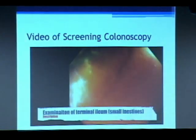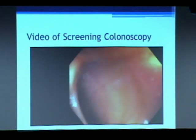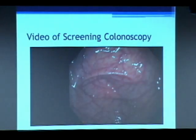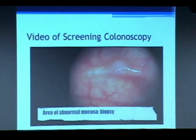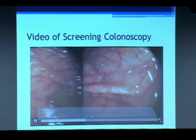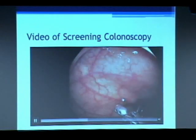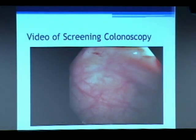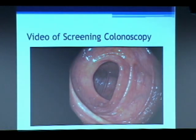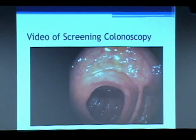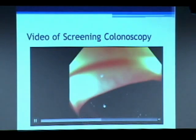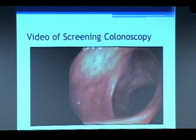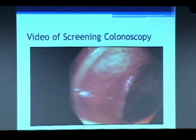We identify the opening for the appendix, which tells us we've made it all the way to where we need to go — we get to that point about 96% of the time. Here I get into the small intestines, called the terminal ileum, to verify we're in the right location. Then we start taking a look — cleaning, suctioning, looking behind the folds. The colon has a lot of folds and things can hide behind them. I find a small area of abnormal mucosa and use forceps to retrieve it — this is not a polyp.